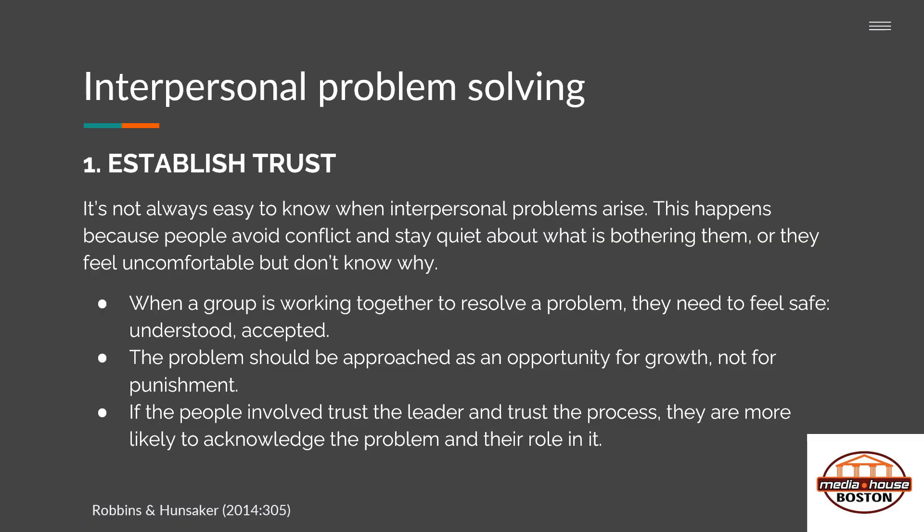This chapter focuses on interpersonal problem solving within an organization. The very first step in resolving problems between people in an organization is to establish trust. It's not always easy to know when interpersonal problems arise, because people avoid conflict and stay quiet about what's bothering them — they feel uncomfortable and don't actually know why. To overcome this obstacle, the people involved need to feel safe, understood, and accepted. The problem should be approached as an opportunity for growth rather than blame and punishment, so that people feel they can be honest about what has occurred and their role in it. If people trust the leader and trust the process, they're more likely to acknowledge the problem and their role in it.